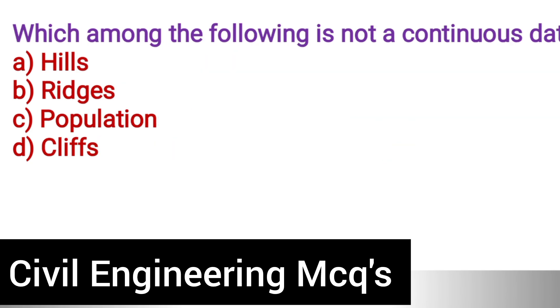Next question: Which among the following is NOT continuous data? Option A: Hills. Option B: Ridges. Option C: Population. Option D: Cliffs. The correct answer is option C, population.